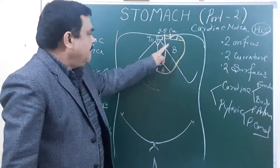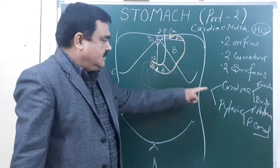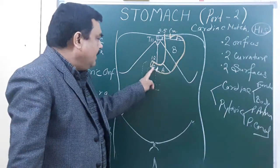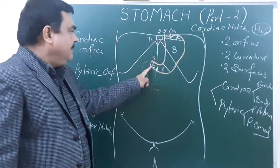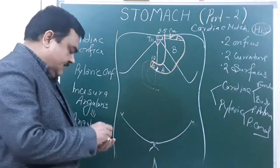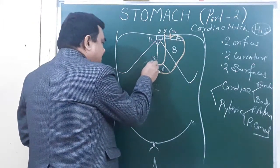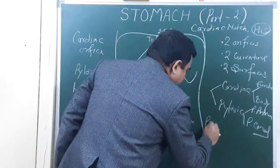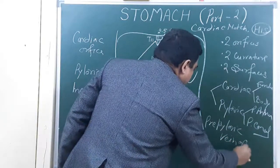So the stomach is initially divided into two parts, then again divided into two parts, giving four parts in total: the fundus, body, pyloric antrum, and pyloric canal. At the pylorus, at the junction of the pyloric part and the first part of the duodenum, a vein is present known as the prepyloric vein of Mayo.